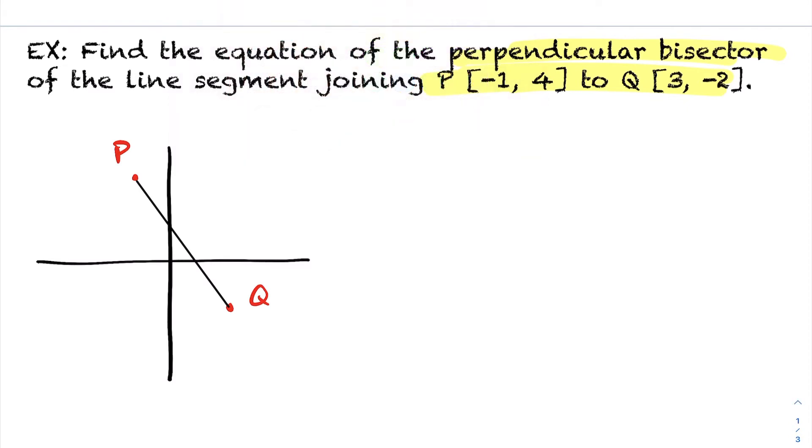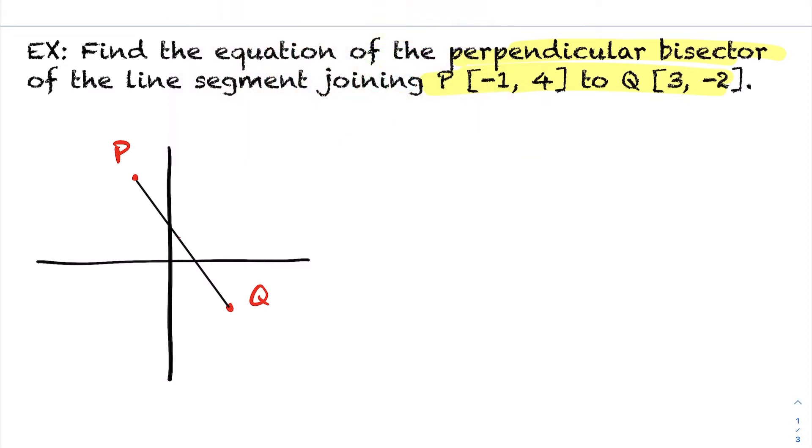Now, my perpendicular bisector, again, I'm just guessing and making a visual, might look something like this. But I know it's got to meet at 90 degrees, and it has to be the midpoint.